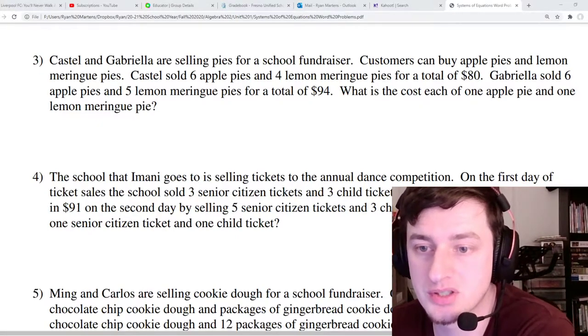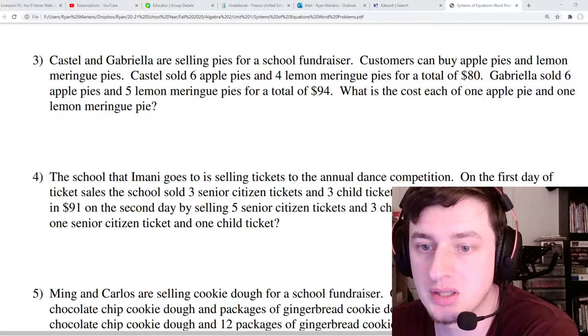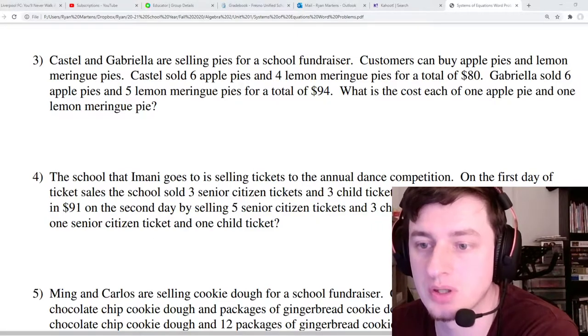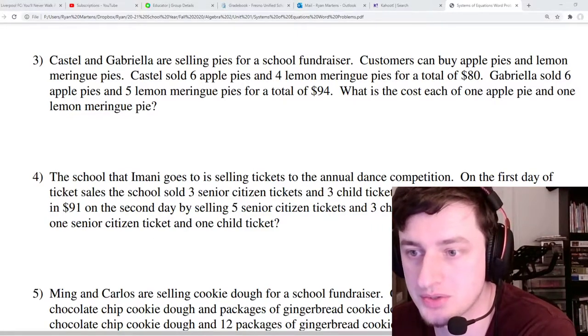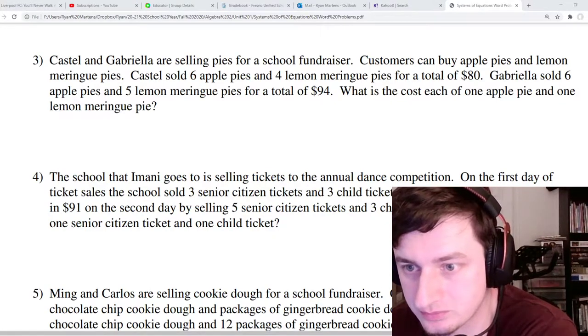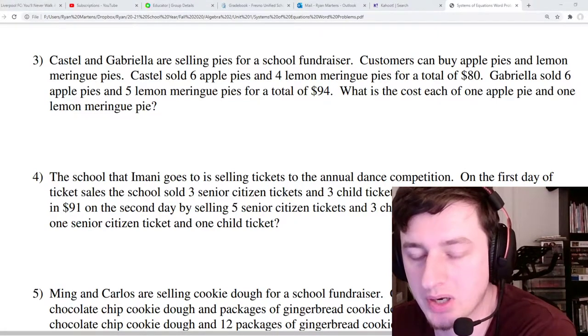Castel and Gabriela are selling pies for a school fundraiser. Customers can buy apple pies and lemon meringue pies. Castel sold 6 apple pies and 4 lemon meringue pies for a total of $80. Gabriela sold 6 apple pies and 5 lemon meringue pies for a total of $94. What is the cost each of one apple pie and one lemon meringue pie?